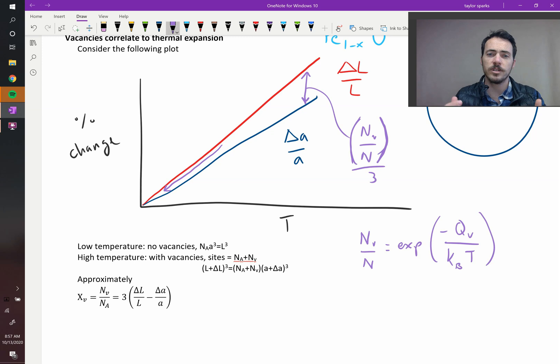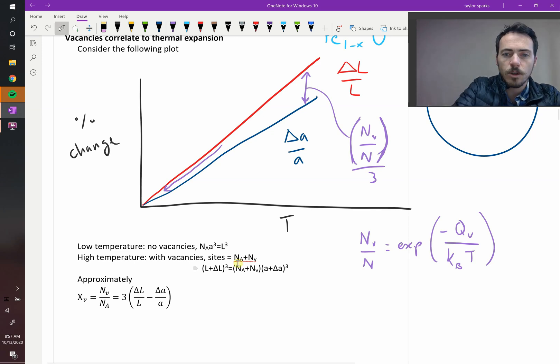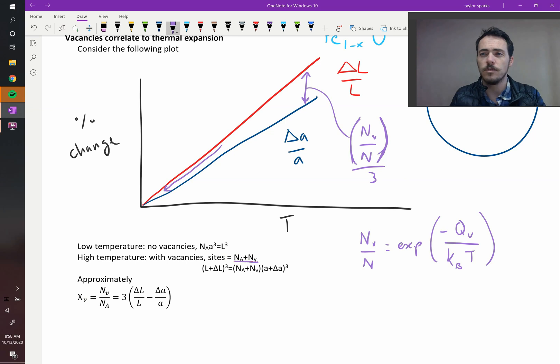But at high temperatures, with vacancies, you've got your total number of atoms, like the size of your component is going to be the total number of atoms plus the number of vacancies you formed because every one of those vacancies put an atom on the surface so it got larger. So that allows us to write this expression that delta L over L cubed simply equals NA plus NV multiplied by the quantity of A over delta A cubed. Or finally, the more useful form of this equation is as follows. Chi V, which is our vacancy concentration, it's NV over the total number of atoms, is equal to 3 times the quantity of delta L over L minus delta A over A.